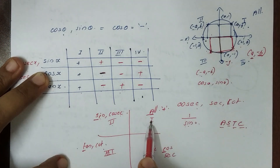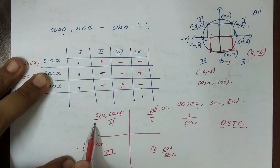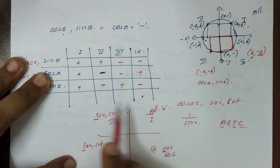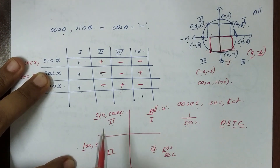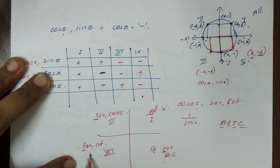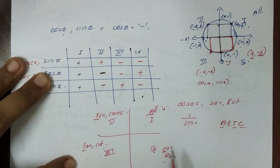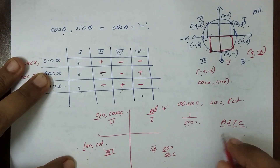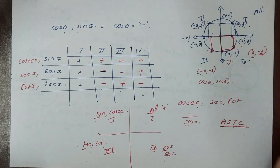In the first quadrant, all is positive. In the second quadrant, sine and its reciprocal are positive, but the other values are negative. In the third quadrant, tan and its reciprocal are positive, but the other values are negative. In the fourth quadrant, cos and its reciprocal are positive, but the other values are negative. All Silver Tea Cups.